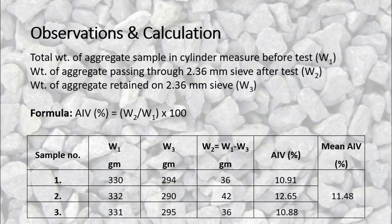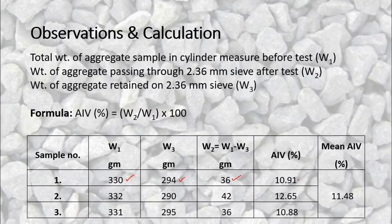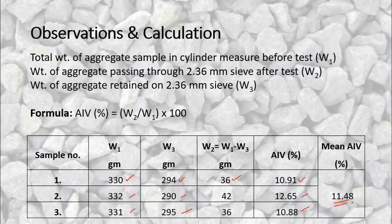Three readings are taken and averaged for statistical accuracy. For the first demonstration reading: W1 = 330 g, W3 = 294 g, giving W2 = 36 g, and AIV = 10.91%. The other two readings are similarly calculated, and the average of all three readings gives an AIV of 11.48%. This concludes the first objective — the aggregate impact value is 11.48%.